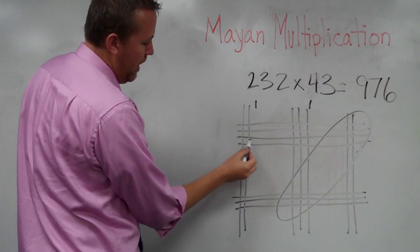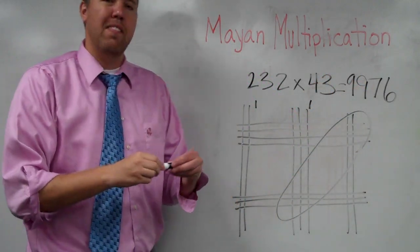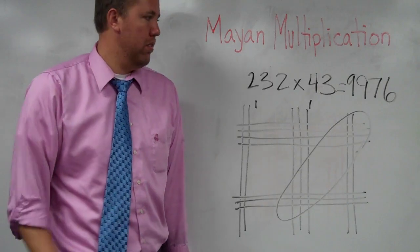1, 2, 3, 4, 5, 6, 7, 8, 9. So 232 times 43 equals 9,976, according to the ancient Mayans.